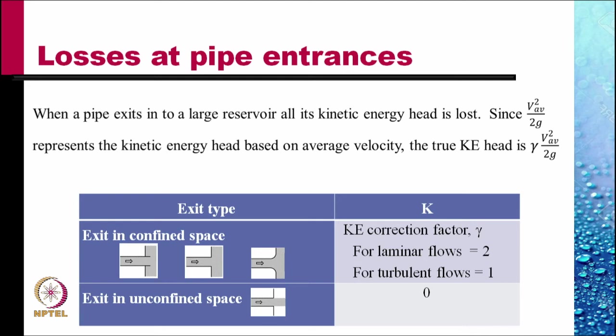For laminar flows, the kinetic energy correction factor is 2. For turbulent flow, the kinetic energy correction factor is 1. And when the flow exits into unconfined space, that is it comes out as a jet, no energy is lost and so, the value of k is 0.